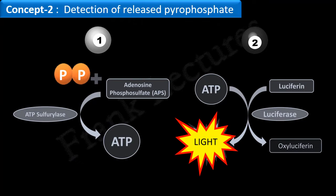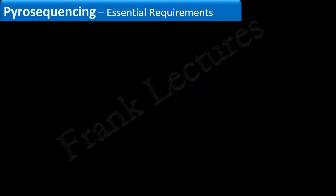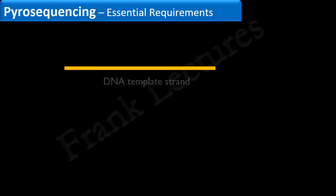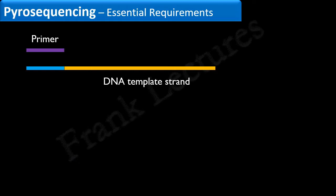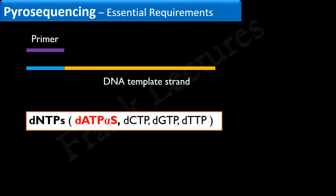The requirements for Pyrosequencing are as follows. Firstly, we need a DNA fragment that we want to sequence — this DNA fragment will be our template strand. This DNA fragment is engineered at one end with a sequence that is complementary to a primer. So, obviously, our second requirement is the primer. Our third requirement is deoxynucleotides.